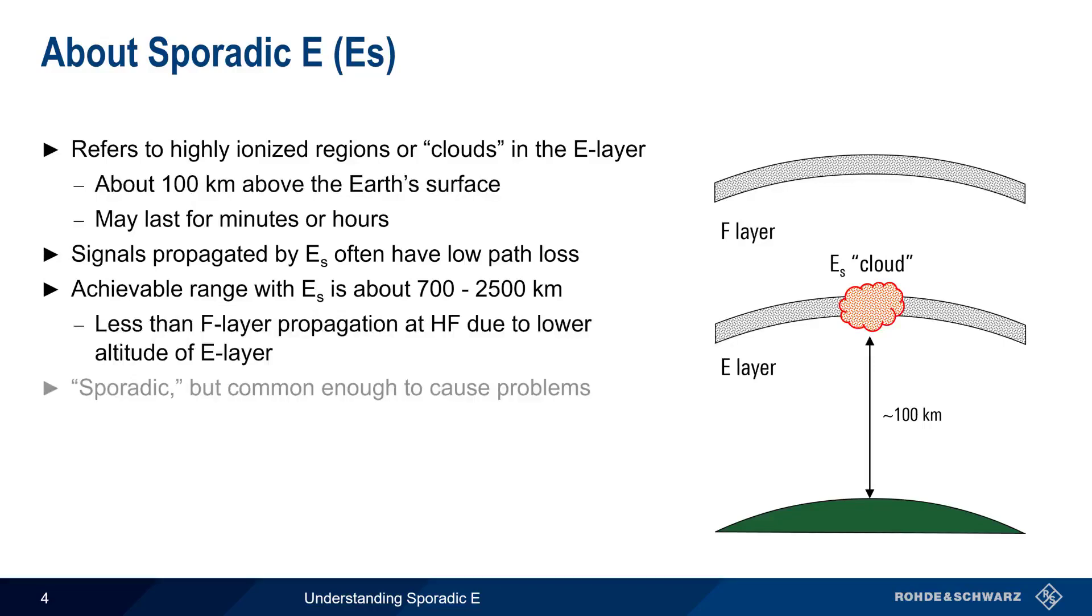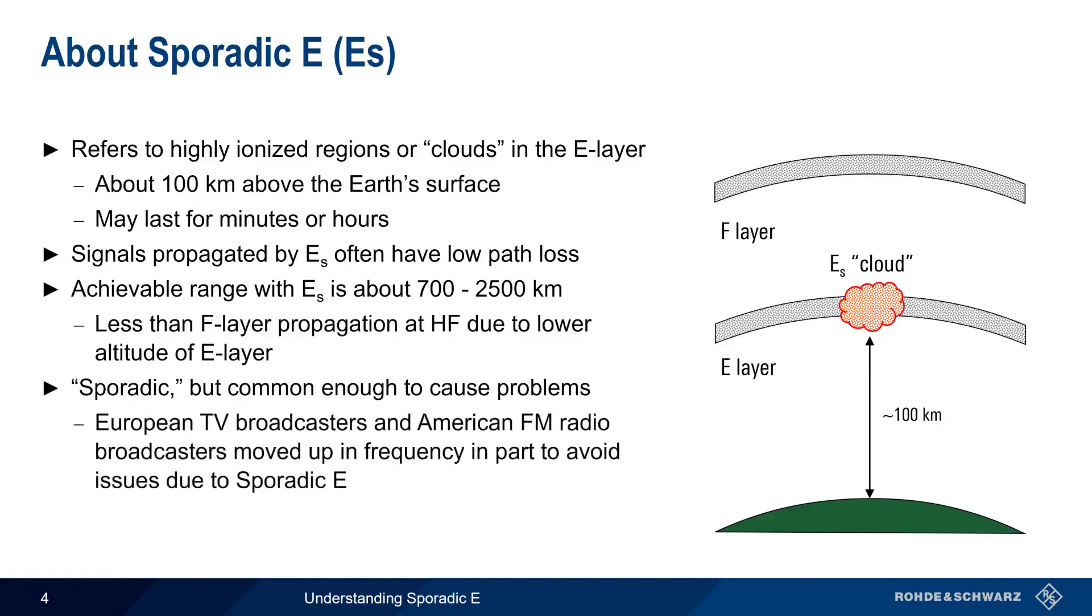This mode of propagation is called sporadic because it's difficult to predict, but it's still common enough to cause problems. For example, European TV broadcasters and American FM radio broadcasters moved up from their original lower frequencies, in part to avoid issues caused by sporadic E.